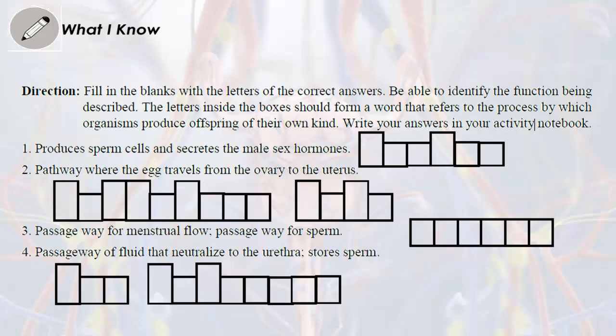Direction: Fill in the blanks with the letters of the correct answers. Be able to identify the function being described. The letters inside the boxes should form a word that refers to the process by which organisms produce offspring of their own kind. Write your answers in your activity notebook.